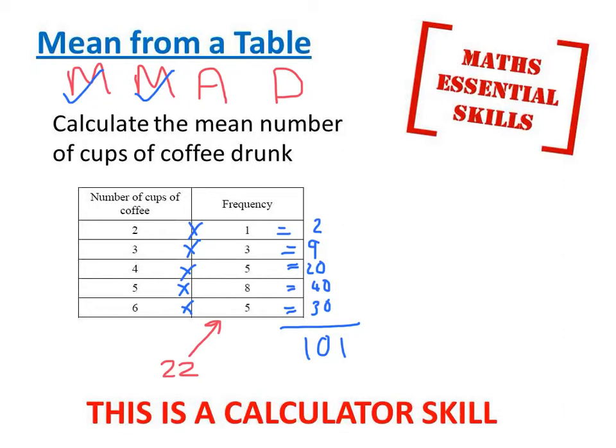Finally, I will work out the division. 101 divided by 22, which gives me an answer of 4.6 cups of coffee. Is that reasonable? Well, the number of cups of coffee range from 2 to 6, so a mean of 4.6 is definitely reasonable. I'm happy with that answer.